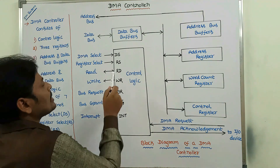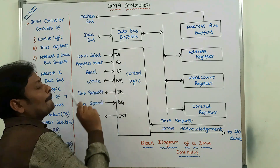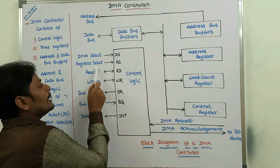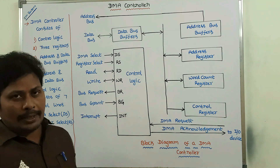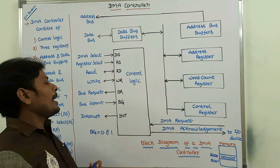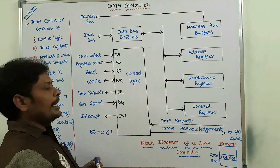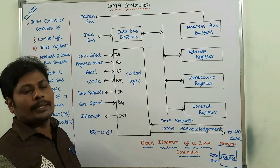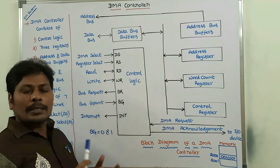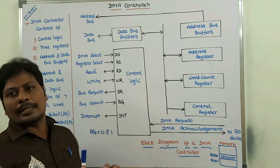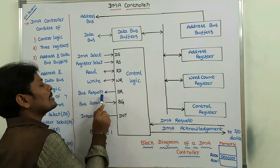The next two lines are the read control line and write control line. These two lines are bidirectional control lines — they can work as both input and output to the control logic. The next two control lines are bus request and bus grant lines. A request to the bus can be made through the bus request line whenever we want to access the bus.